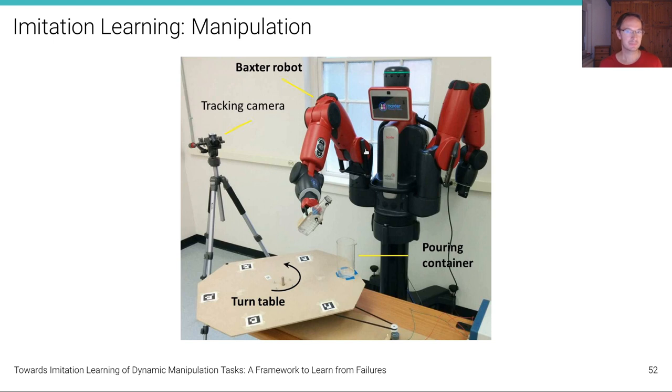Let's first see some examples of imitation learning. In this lecture we are mainly focused on self-driving, but imitation learning has actually been applied in very different contexts. For example, in the context of manipulation.